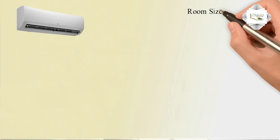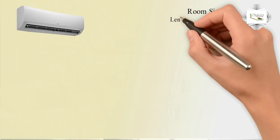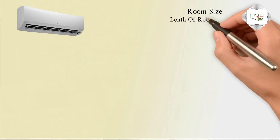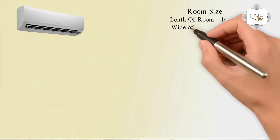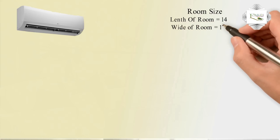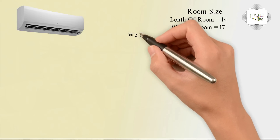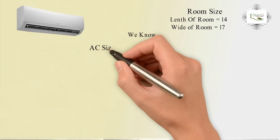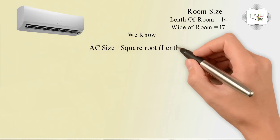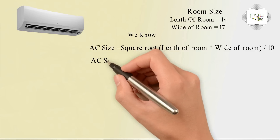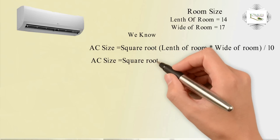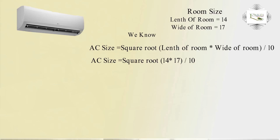Room size: length of room equals 14 feet, width of room equals 17 feet. SSI is equal to the square root of: first bracket, length of room multiplied by width of room, bracket closed, divided by 10 feet. Room height is equal to 10 feet.